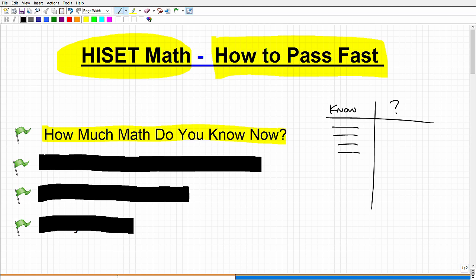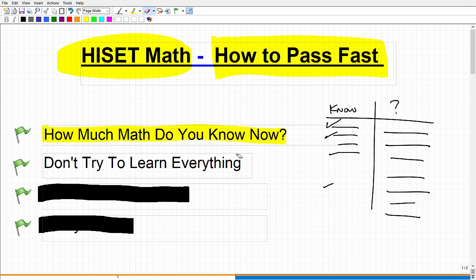So how much math do you currently know? Well, try to go through, if you have a book or if you're taking a course like my course, go through and say, okay, yeah, I think I know this. I think I know that and this and this. So that would leave you with the things that you don't know, okay? So there's going to be a whole bunch because remember in the HiSET, there's a considerable amount of algebra and geometry. But you want to get some sort of idea of what you think you know already.